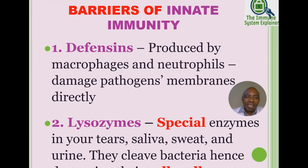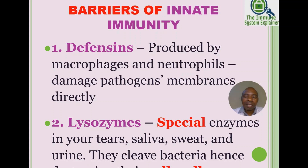The first chemical barrier is defensins. Defensins are antimicrobial structures produced by macrophages and neutrophils, and they directly damage the plasma membranes or cell walls of pathogens.